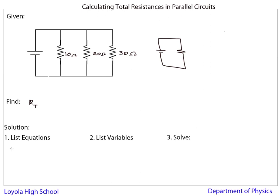So for parallel resistors, the equation is a reciprocal relationship. It's 1 over RT equals 1 over R1 plus 1 over R2 plus 1 over R3. And if we had more resistors, we would continue to add them up in the equation.